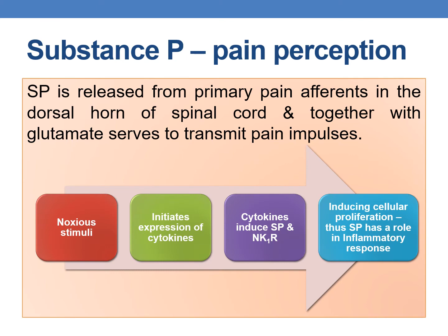Substance P is released from primary pain afferents in the dorsal horn of the spinal cord and, together with glutamate, serves to transmit pain impulses. A noxious stimulus leads to initiation of cytokine expression, and these cytokines induce Substance P and NK1 receptors. This leads to cellular proliferation, confirming that Substance P has a role in the inflammatory response.